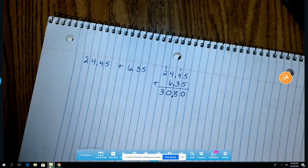And there I go I have my answer. 30 and 8 tenths or 30 and 80 hundredths. Whichever way you want to say it is fine. Let's try another one.